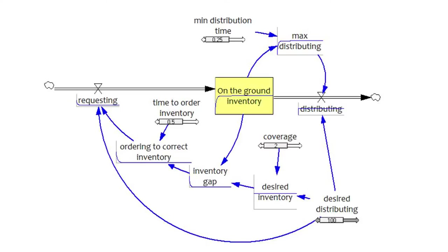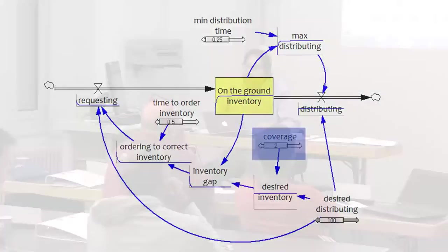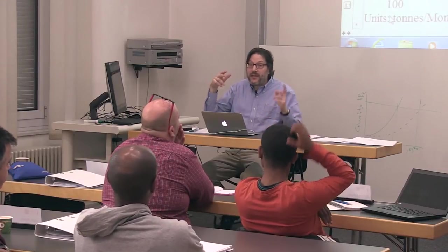So the simulation starts out with no inventory. So inventory is zero. Desired distributing starts out at 100. We'd like to have two months of inventory. So if desired distributing is 100 per month, if we want two months, that means an inventory we'd like to have? 200. But we have zero.